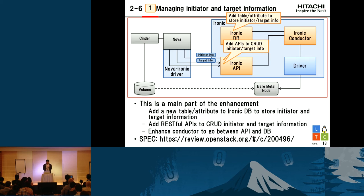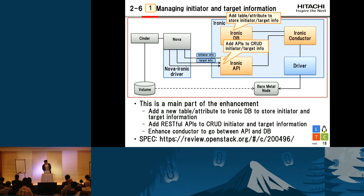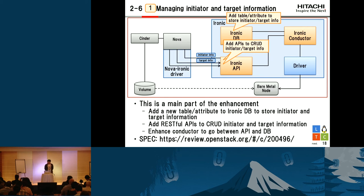The first function is managing initiator and target information. This is the main part of this enhancement. To manage initiator and target information, we add a new table and attribute to the Ironic database to store initiator and target information. We also add a RESTful API to create, read, update, and delete that information. And of course we enhance the conductor to go between the API and the database. We have already proposed a spec for this function, so if you're interested in the details, please look at that spec.